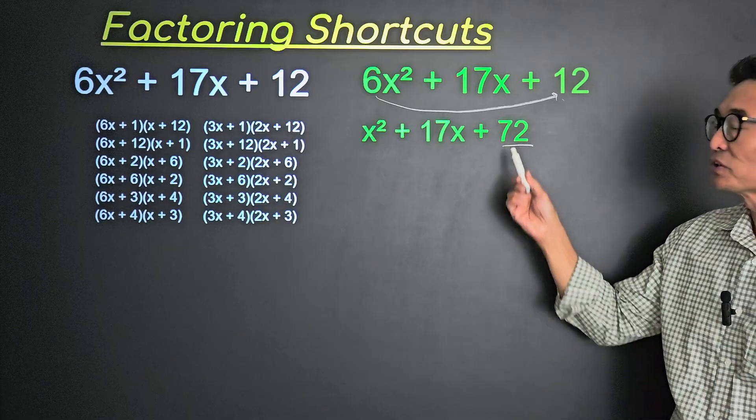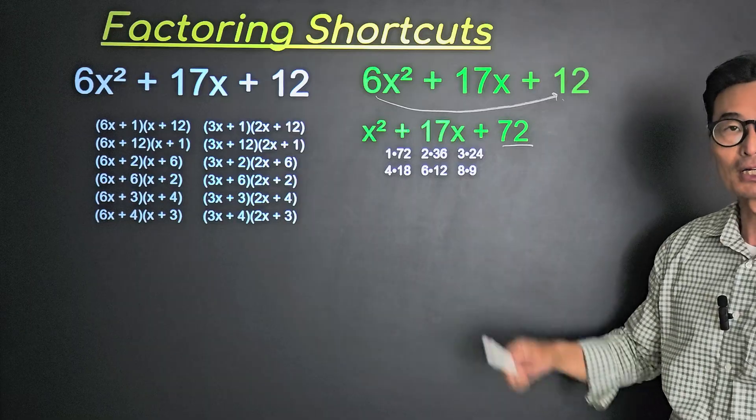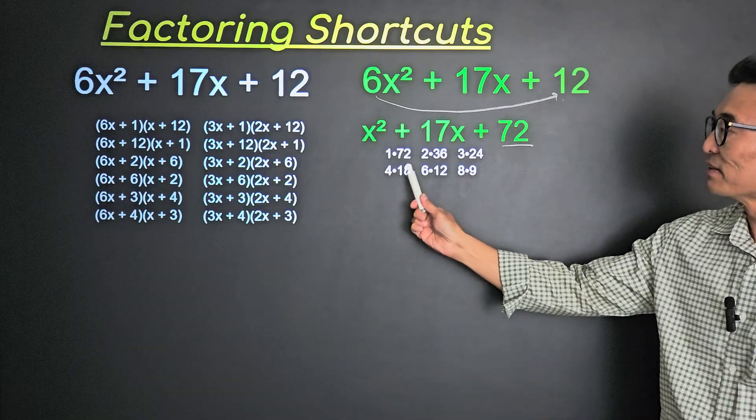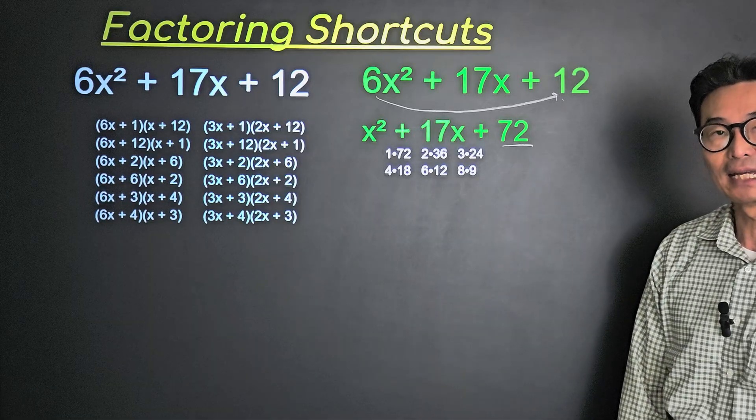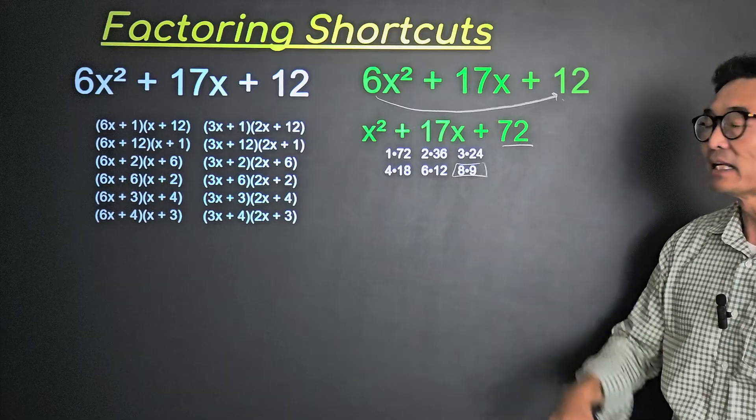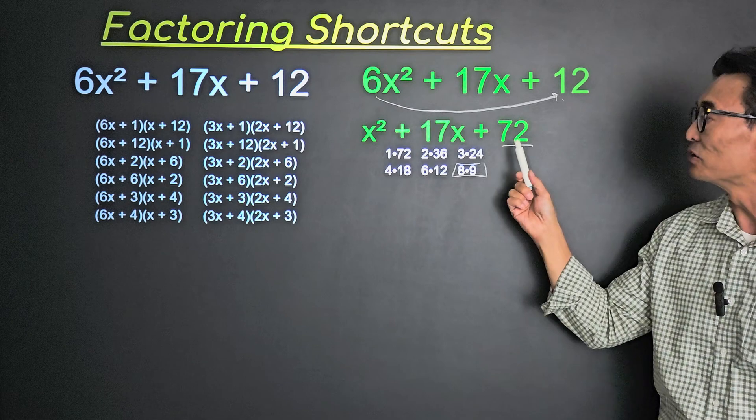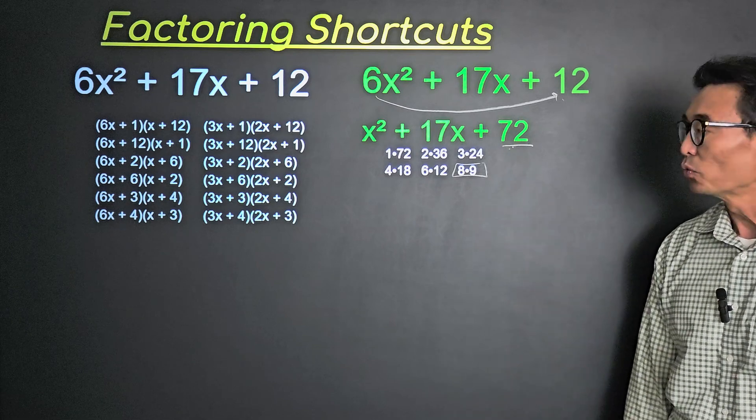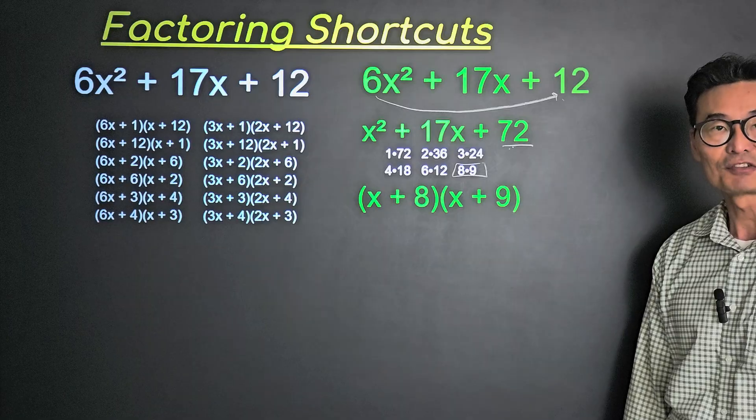Now, in order to get 72, there are 6 different ways to get a product of 72: 1 and 72, 4 and 18, 2 and 36, 6 and 12, 3 and 24, and 8 and 9. Of these 6, if we add the 8 and the 9, we end up with the 17. So if we factor this, we end up with x + 8 times x + 9.